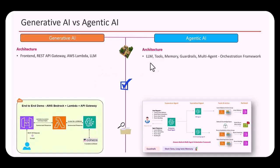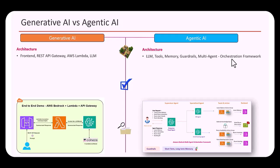For agentic AI, you have a large language model driving the agent, along with tools such as Lambda functions and knowledge bases that query backend systems. There's also memory to contextualize and personalize responses, guardrails, and for multi-agent applications you need an orchestration framework such as Amazon Bedrock Multi-Agent Orchestration, LangGraph, or CrewAI.